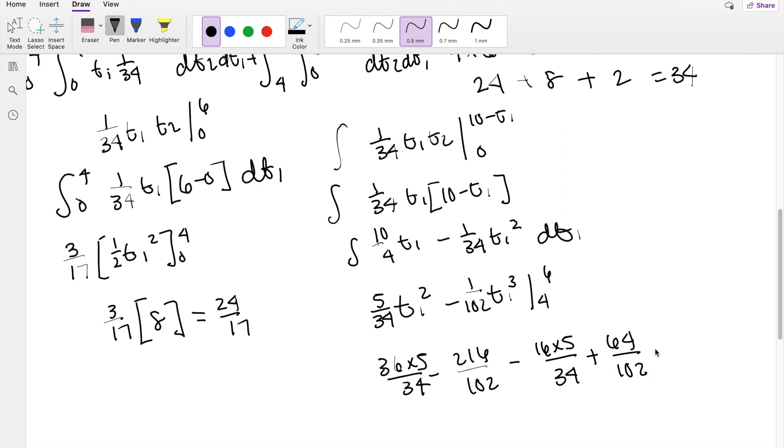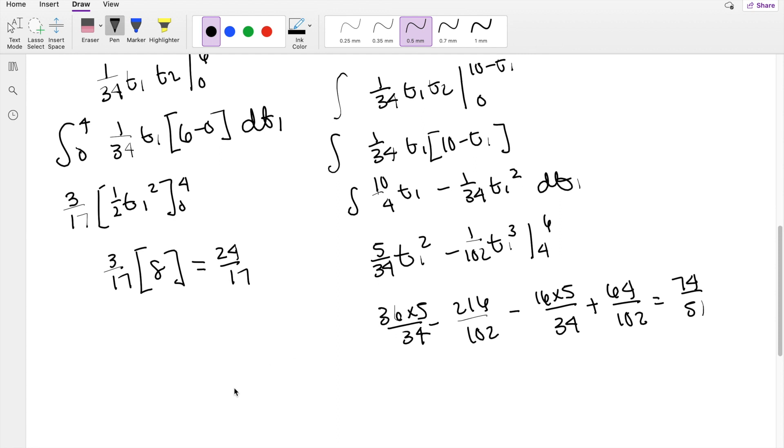You get this is equal to 74 over 51. So the whole expectation of t1 is equal to 24 over 17 plus 74 over 51, which is equal to 146 over 51, or approximately equal to 2.8627.